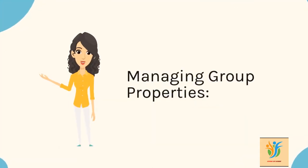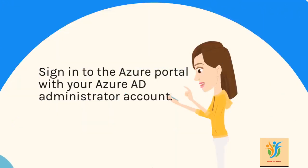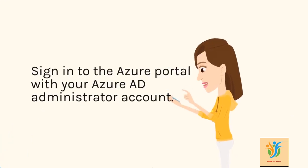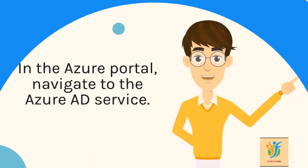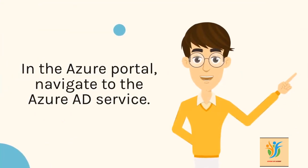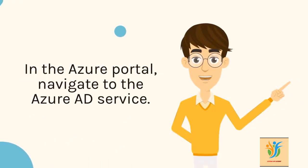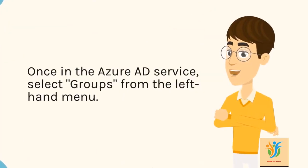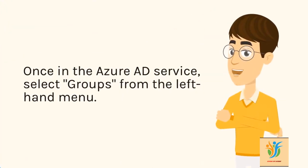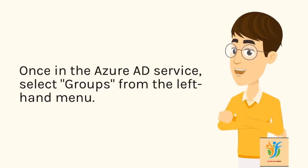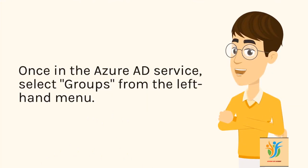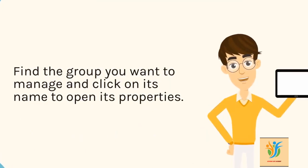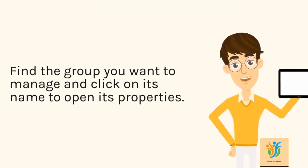Managing group properties. Sign into the Azure portal with your Azure AD administrator account. In the Azure portal, navigate to the Azure AD service. Once in the Azure AD service, select Groups from the left-hand menu. Find the group you want to manage and click on its name to open its properties.